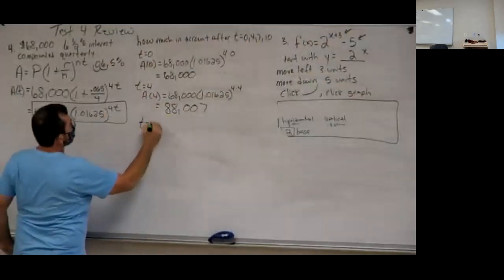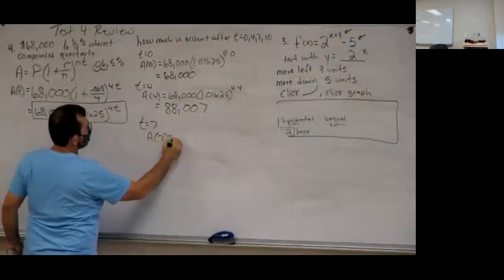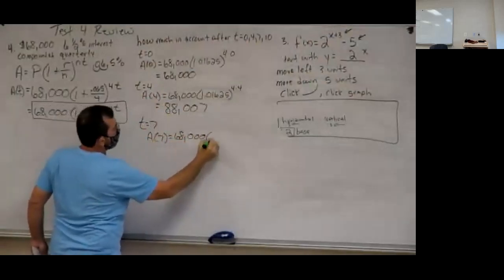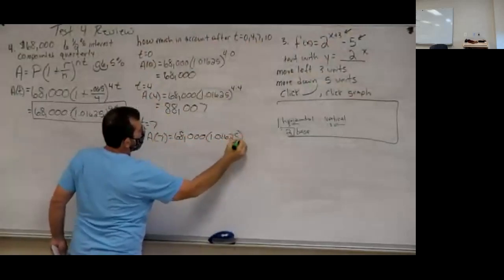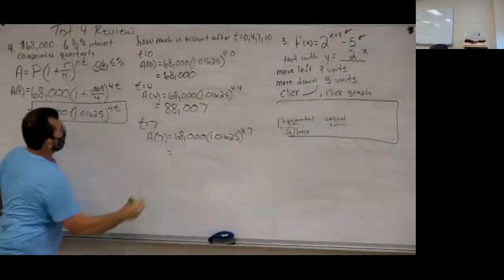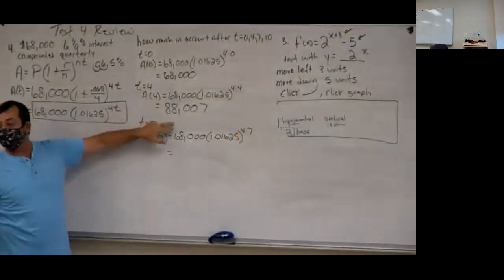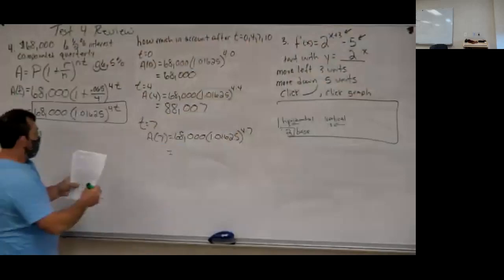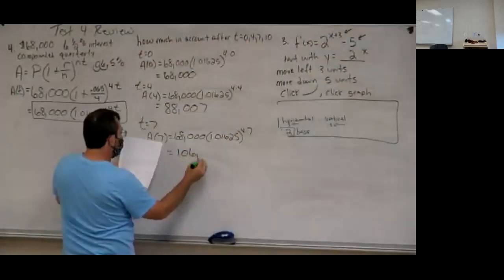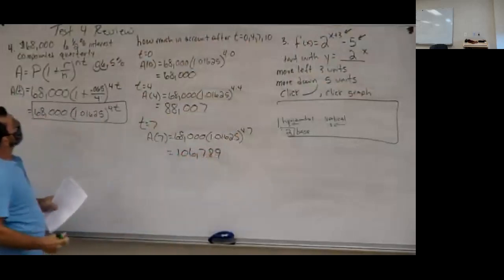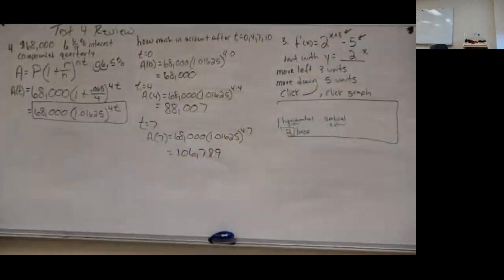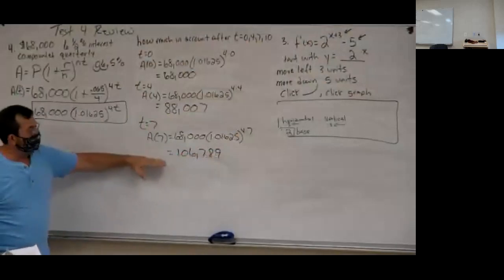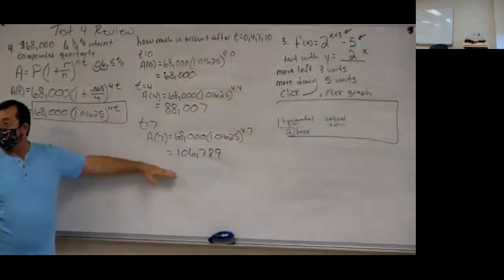Next, T equals 7: A(7) equals 68,000 times 1.01625 raised to 4 times 7, which is to the 28th. Notice — starting from $68,000, after just 4 years you already made almost $20,000. With T equals 7, I came up with $106,789. That 6.5% is a pretty high interest rate, so they went from $68,000 to $106,000 in seven years.